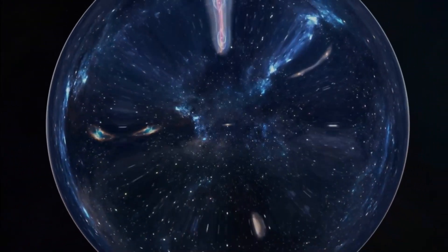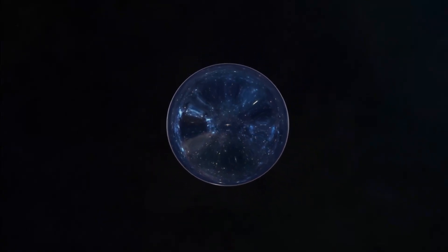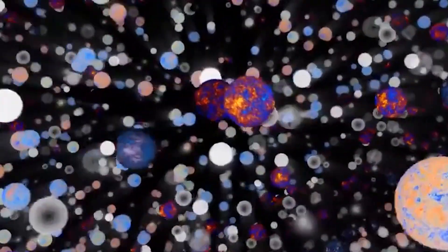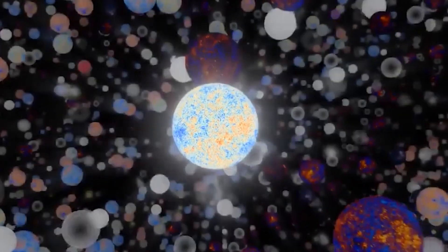But how is that even possible? How can something as vast and complex as a universe be created from nothing? The theory of cosmological natural selection, also known as the landscape theory, proposes that there could be a large number of universes, and our universe is just one of them.